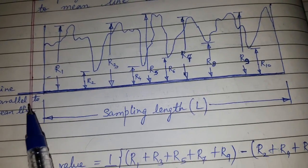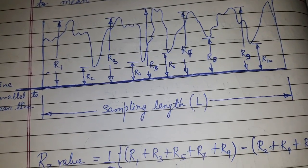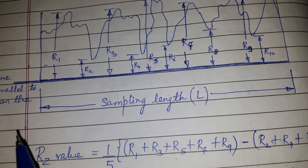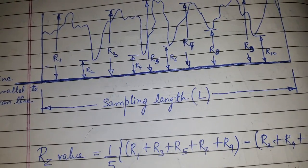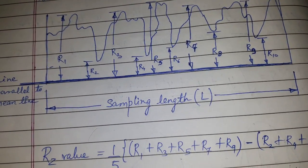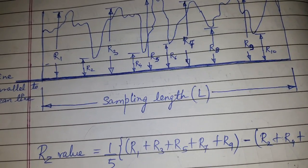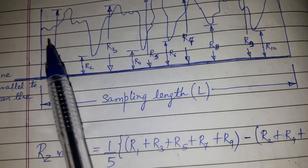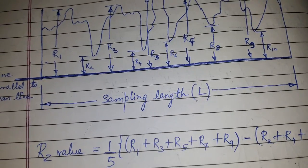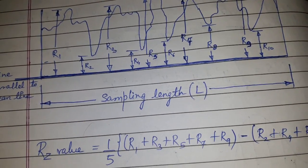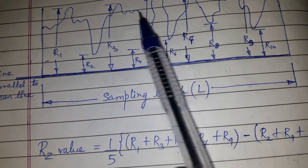line which is parallel to the mean line. This reference line, with respect to which all the peaks and valleys are taken, is parallel to the mean line and does not pass through or cross the profile.